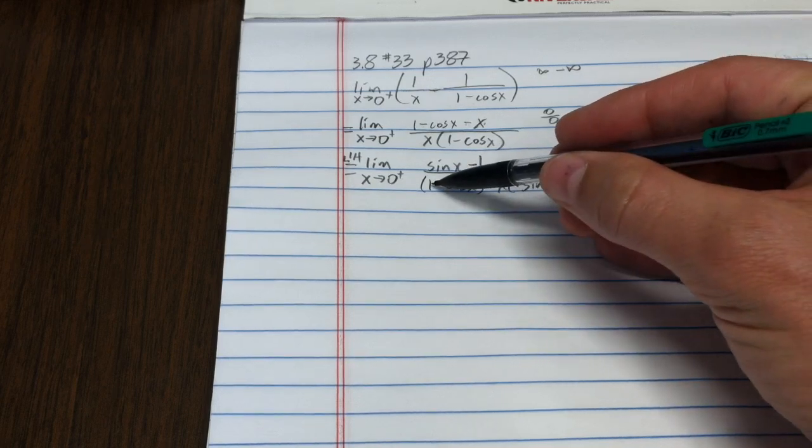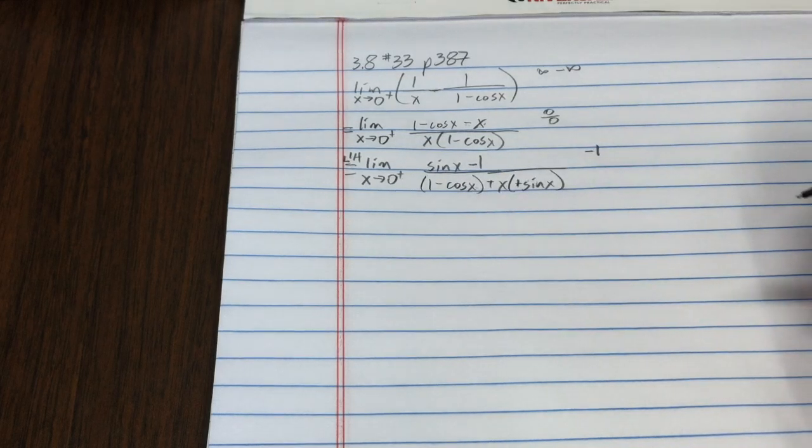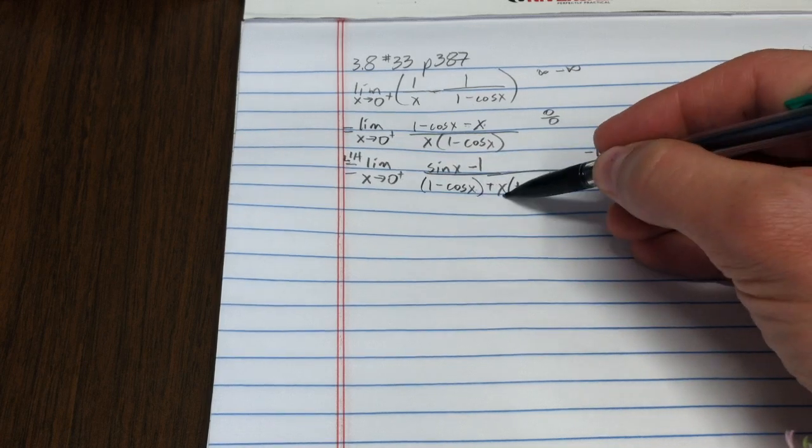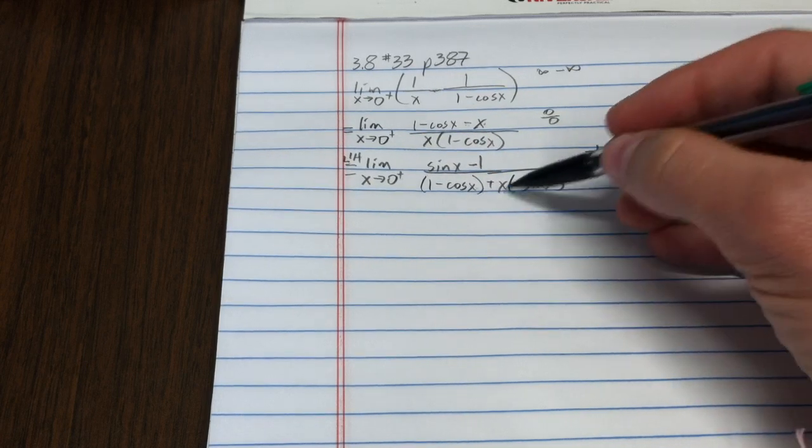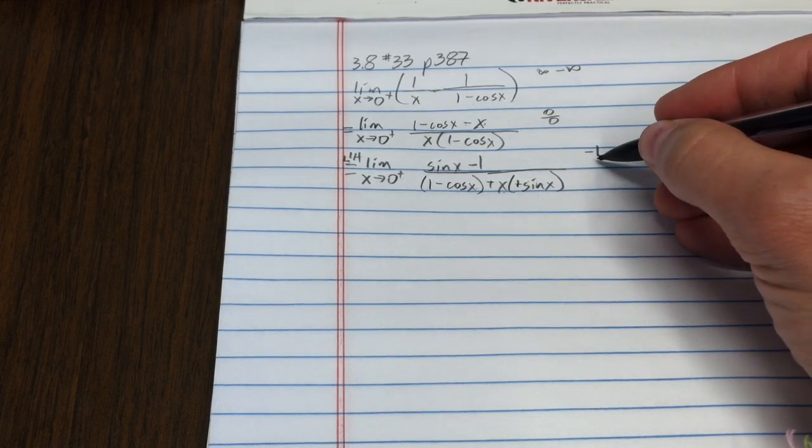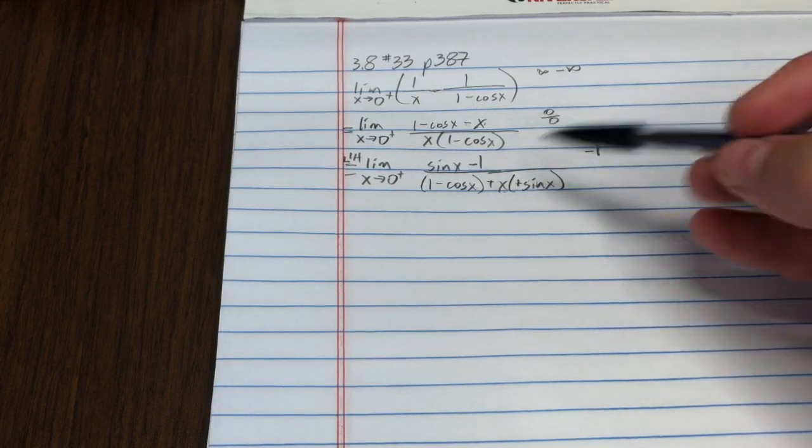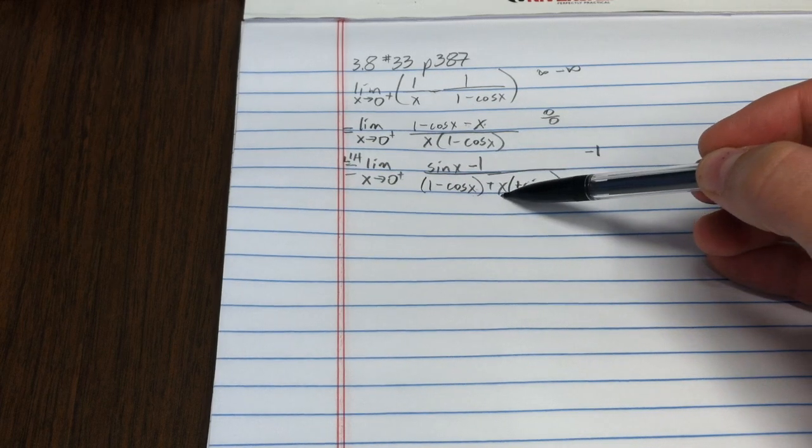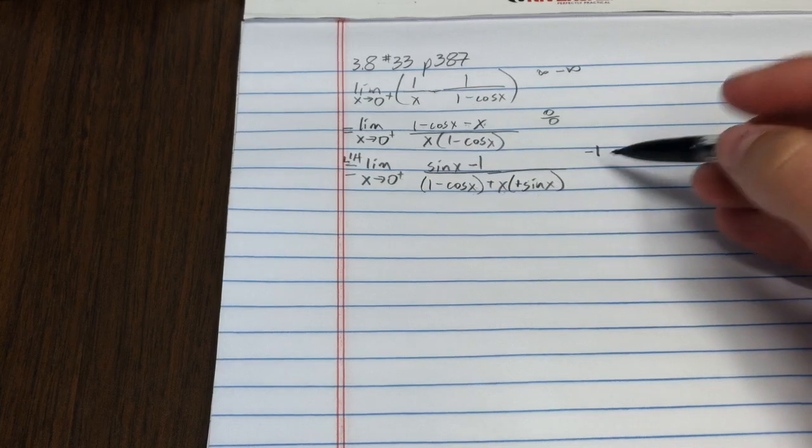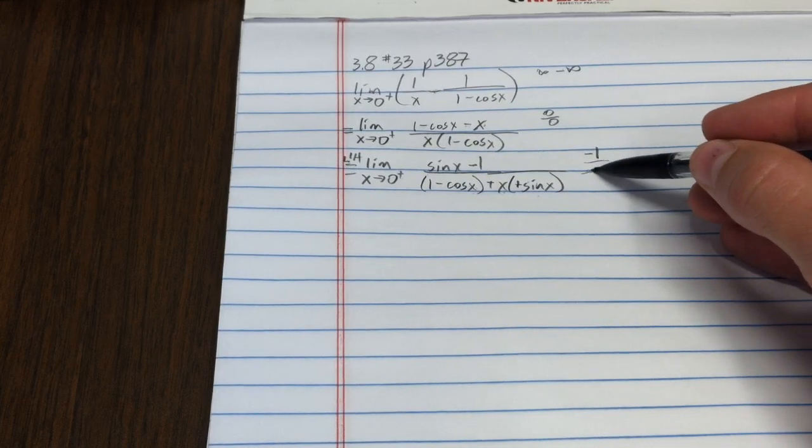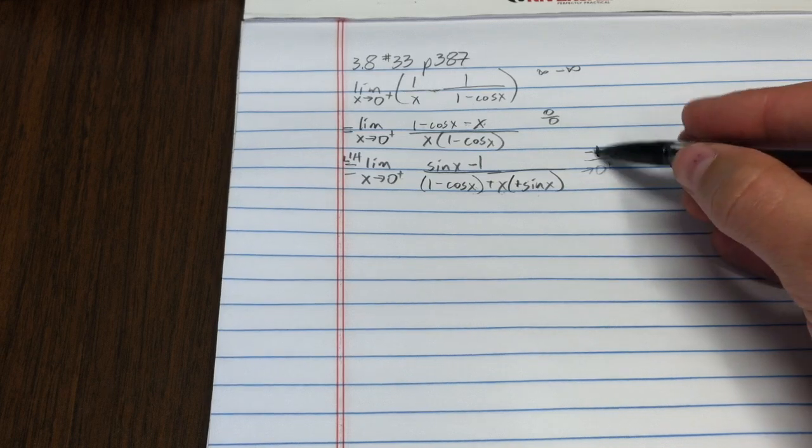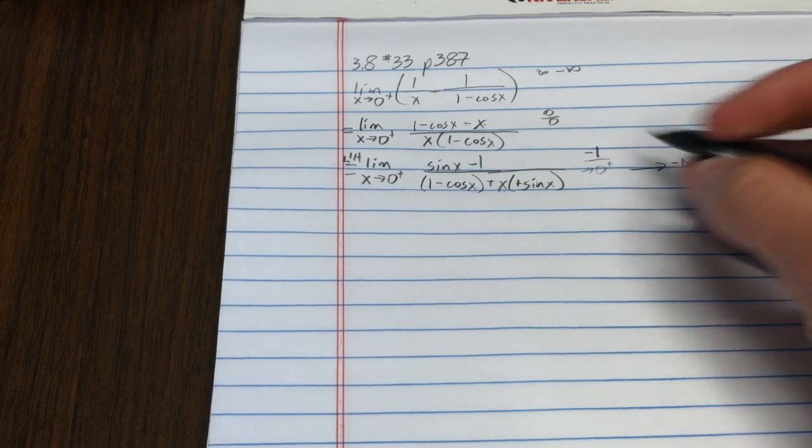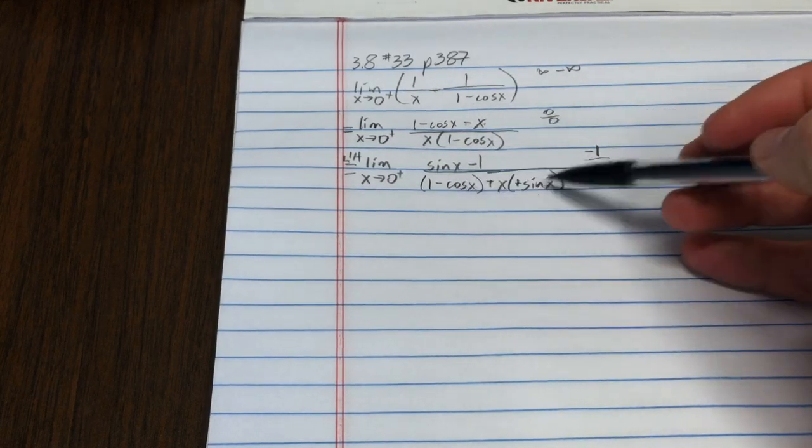The denominator gets closer and closer to, we have 1 minus cosine x that's getting close to 0, plus x is getting close to 0. So the denominator goes to 0 from the positive direction, so this whole thing should approach negative infinity, and L'Hôpital's rule doesn't actually apply there.